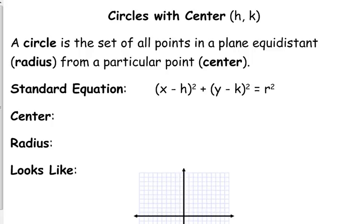Circles. With a center of hk, the technical definition of a circle is that it's the set of all points that are equidistant from a particular point, the center. You have a point in the plane - all the other points on the circle are the same distance from that center, and that distance is the radius. The standard equation for a circle is (x - h)² + (y - k)² = r².